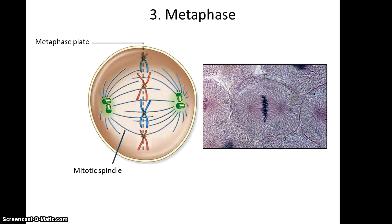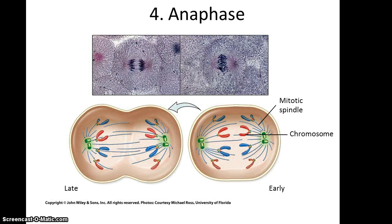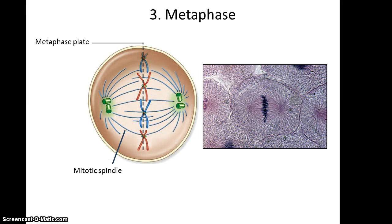During metaphase, the chromosomes will line up in the center of the cell. This location is referred to as the metaphase plate, and the mitotic spindles will stretch out and attach to the centromere of these chromosomes.